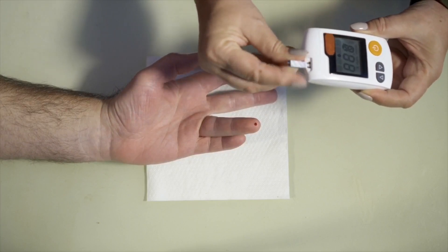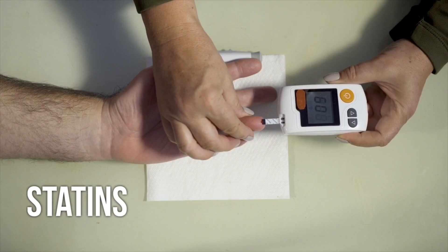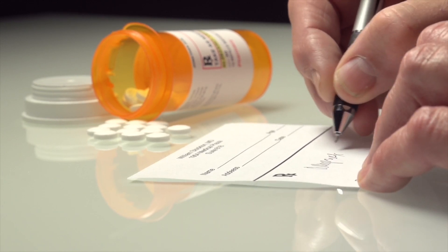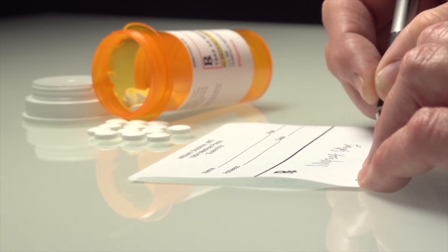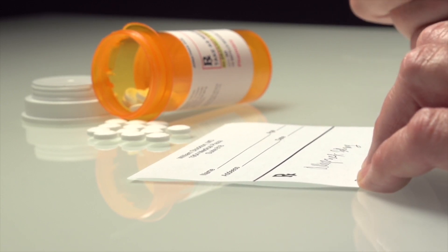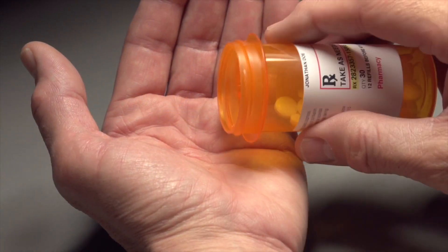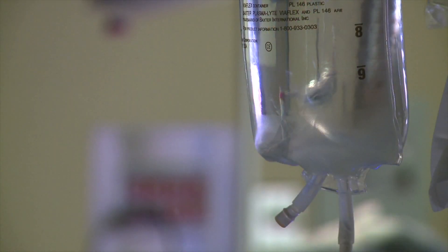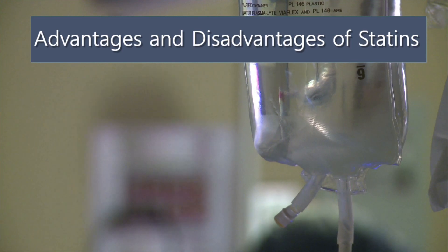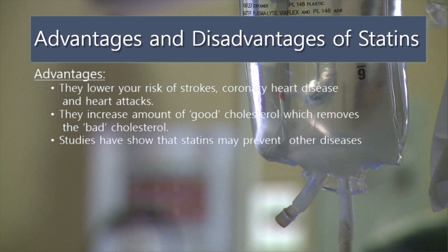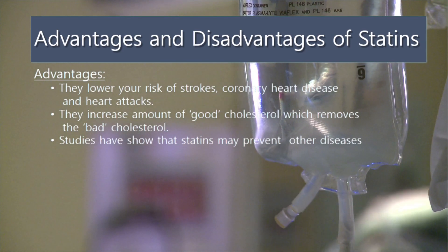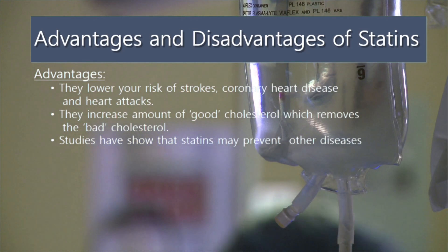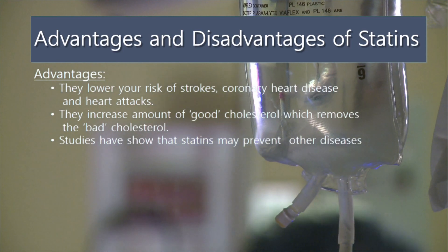Cholesterol is an essential chemical that your body produces to function properly. However, for some people, they have too much of a bad type of cholesterol called LDL cholesterol, which can collect and form fatty deposits inside the walls of the artery — the major cause of coronary heart disease. A drug called a statin can be given to reduce the amount of bad cholesterol in your blood. Statins slow down the rate at which fatty deposits form by reducing LDL cholesterol. They also increase the amount of good cholesterol, called HDL, which helps remove the bad cholesterol.